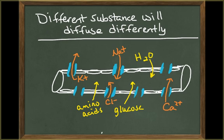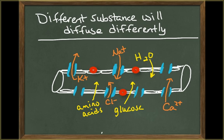Different substances diffuse across capillary walls by different routes. Water, ions, and small molecules, such as glucose and amino acids, can usually enter or leave the bloodstream by diffusing between the endothelial cells of the capillaries, or they can diffuse through the pores of the fenestrated capillaries.